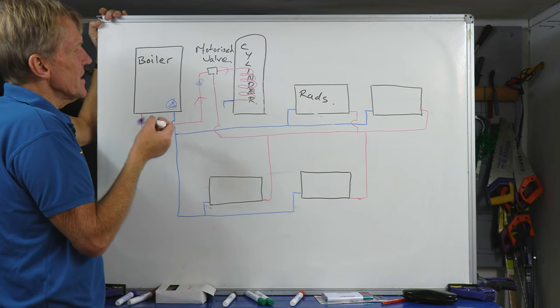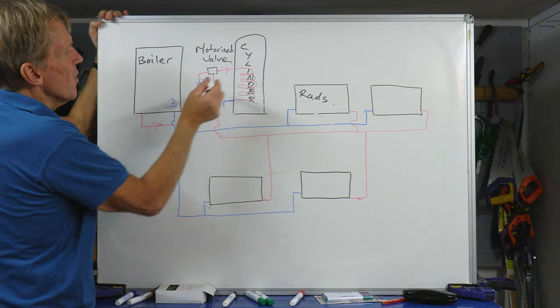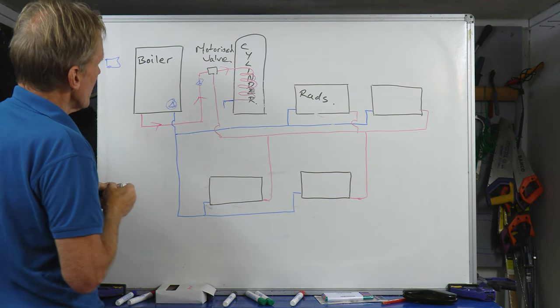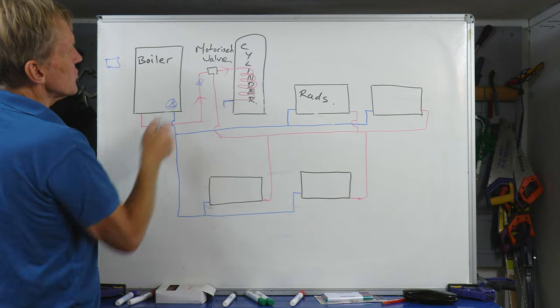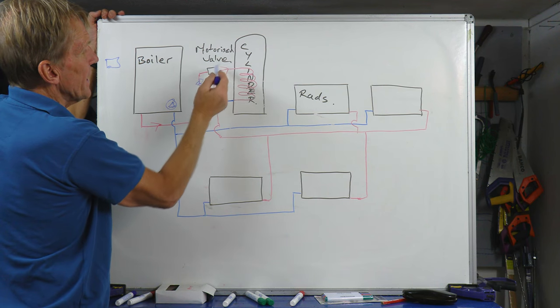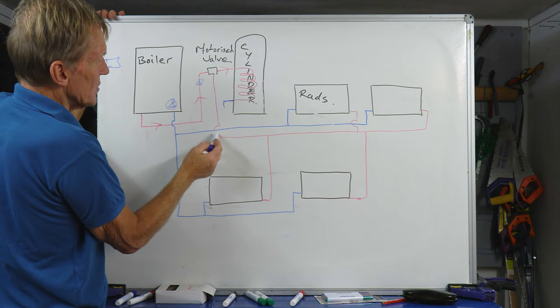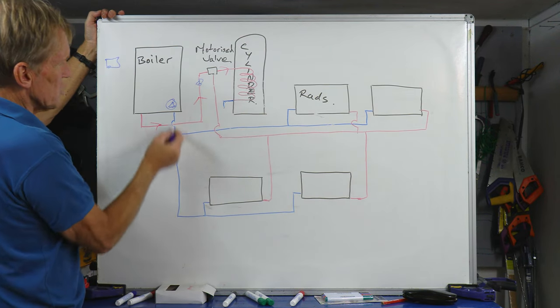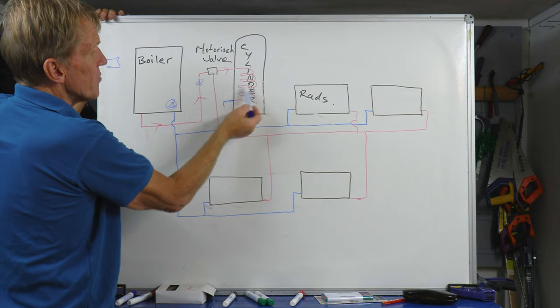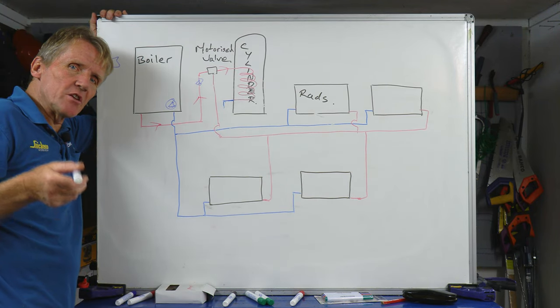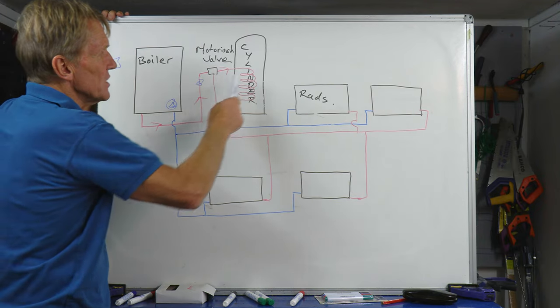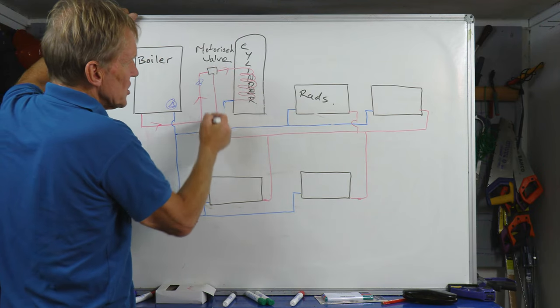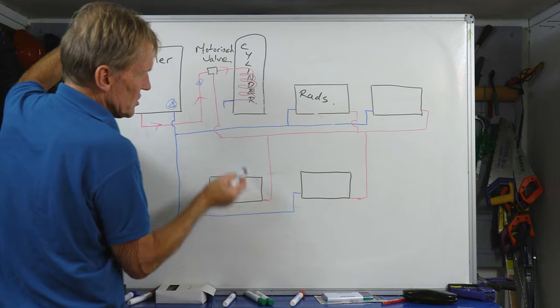So in the winter when you've got the cylinder calling for heat and you've got a room thermostat somewhere that is also calling for heat, it will tell the motorized valve to open up and it will allow water to go down into the radiators and circulate its way back to the boiler. It will also allow water to go through to the cylinder until the point where the cylinder is satisfied. In other words, it's reached its full temperature, nobody's having a bath, nobody's having a shower, so it will turn that circuit off and just leave the central heating running.